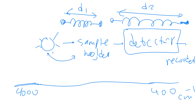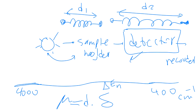Dipole moment mu equals d times delta, where delta represents the change in electronegativity and d is the bond length. The detector looks at how the sample responds — at what region the light is absorbed — and detects the change in dipole moment.